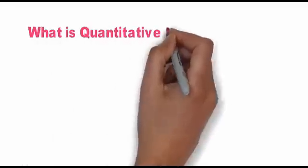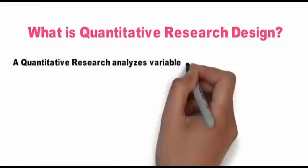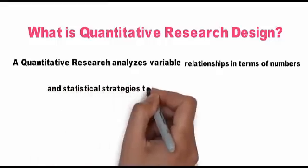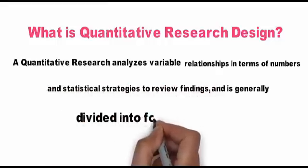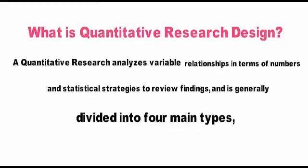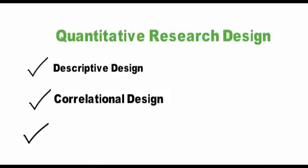Quantitative research analyzes variable relationships in terms of numbers and statistical strategies to review findings, and is generally divided into four main types: one, descriptive design; two, correlational design; three, quasi-experimental design; four, experimental design.